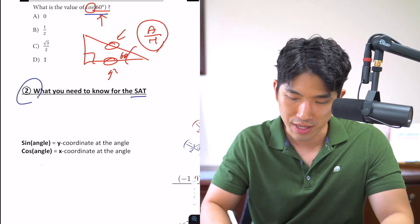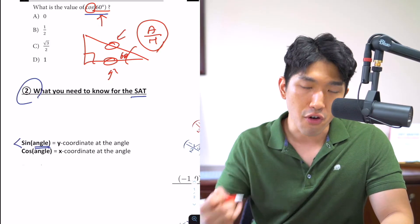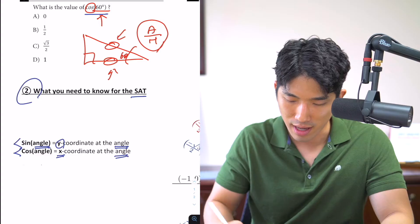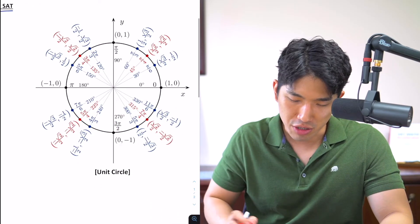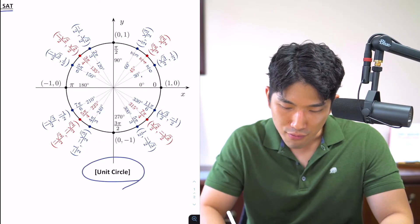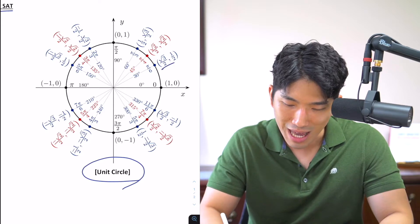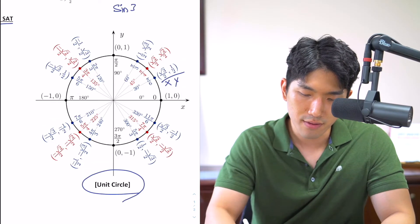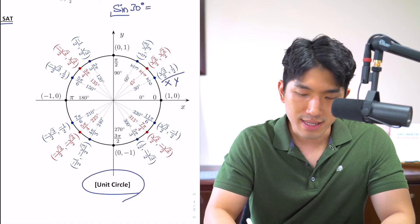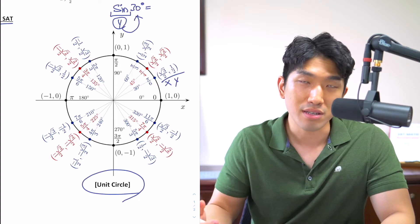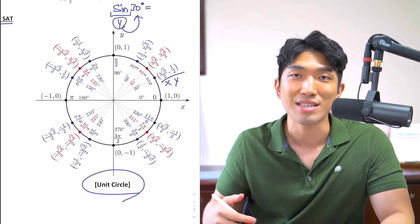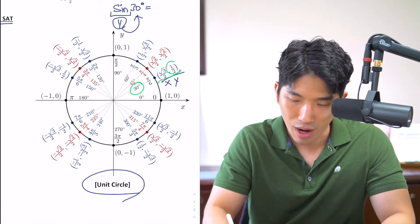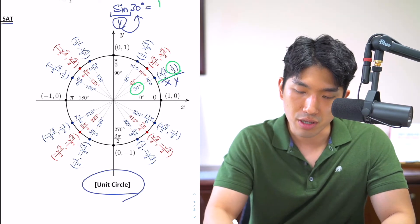What do you need to know about unit circles for the SAT? The sine of an angle refers to the Y coordinate at that specific angle, and cosine refers to the X coordinate at that specific angle. There's this thing called the unit circle, and at every single angle — whether it be 30, 45, or 60 degrees — there is going to be an X coordinate and a Y coordinate. For example, if you're asked to find sine of 30 degrees, sine refers to the Y value, so you find the Y value at 30 degrees on the unit circle, which is one half. So sine of 30 is one half.